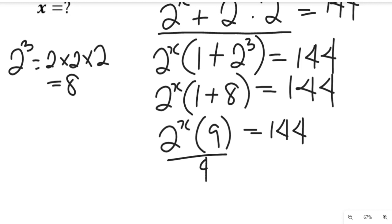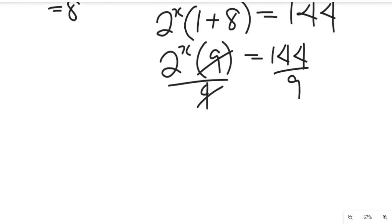Now let's divide both sides by 9. 9 will cancel 9, and what we have left is 2 to the power of x equal to 144 divided by 9.